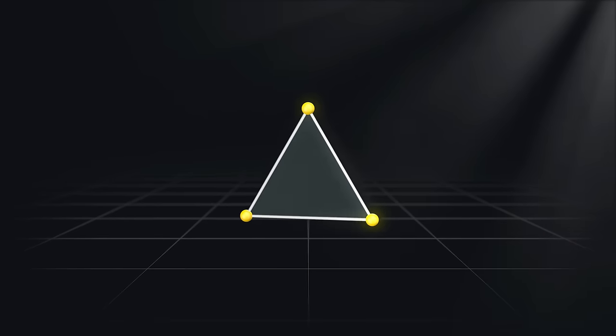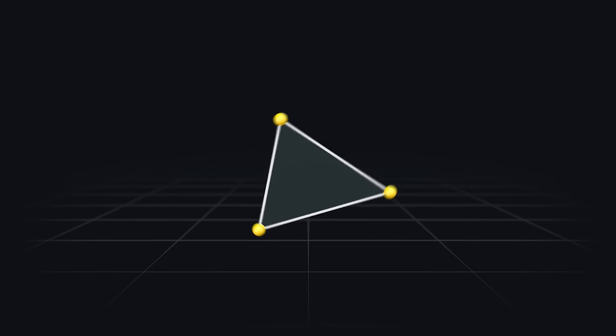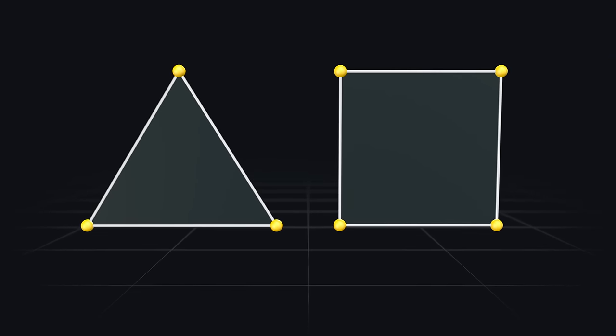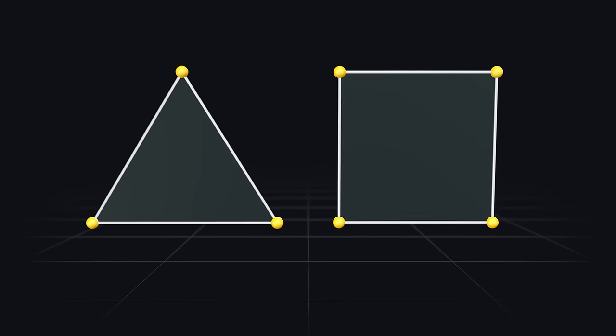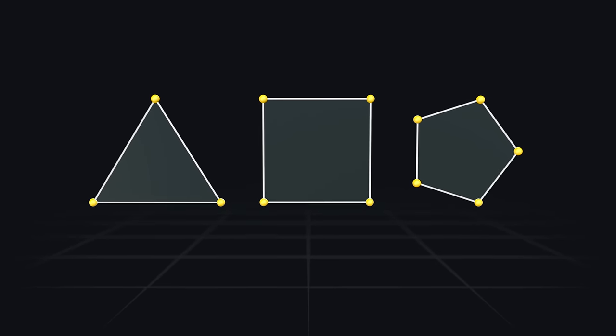This is a triangle, and it represents the fundamental building block of all 3D models and images. By connecting four points together, we can make a quad. This is also called a polygon, but connecting any more than four points will result in an n-gon.